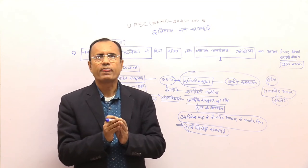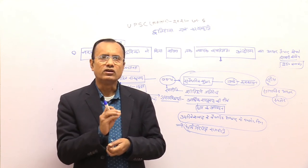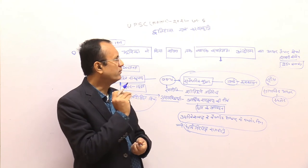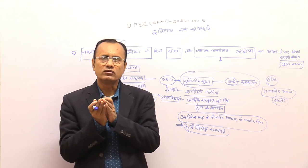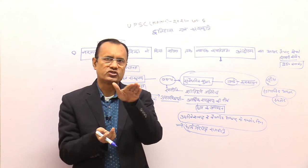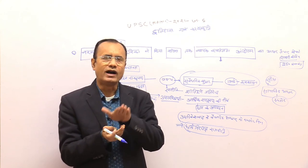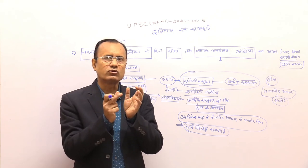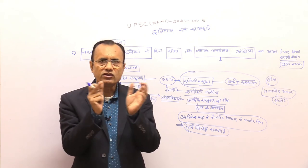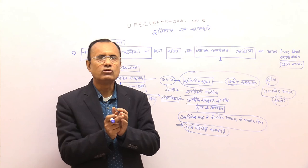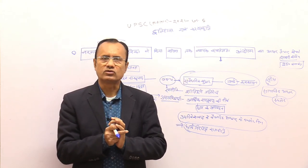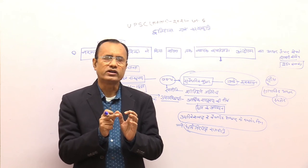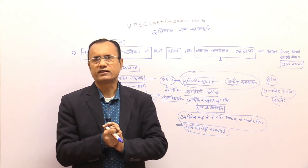उसके बावजूद इन्होंने भारत में व्यापक स्वतंत्रता आंदोलन की पृष्ठभूमि का निर्माण किया और उसी पृष्ठभूमि के ऊपर ही भारत में जो व्यापक स्वतंत्रता आंदोलन हुआ उसके विभिन्न धाराओं के लोग थे उन्होंने उसको आगे की ओर और भारत स्वतंत्र हुआ। तो इस तरह से आप जो है इस पृष्ठभूमि का answer लिख सकते हैं।